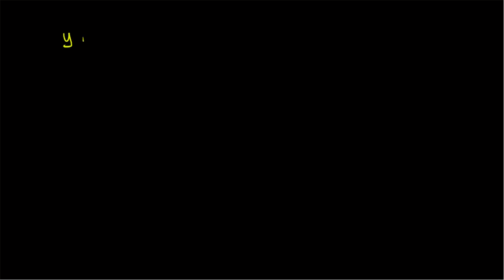For this purpose, consider a system y(n) equal to 2 times x(n) plus 1 by x(n) minus 1. Now, we want to verify if the system is linear or not. Let us call this the system equation as equation 1.